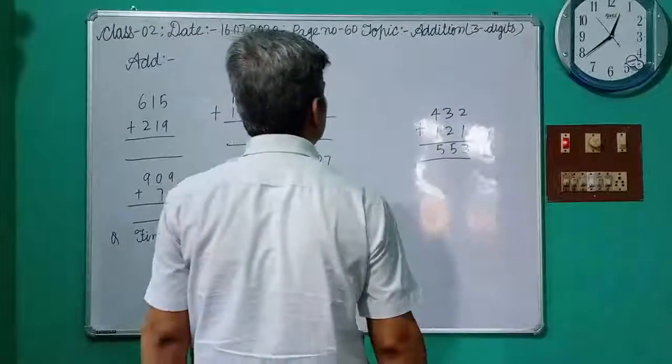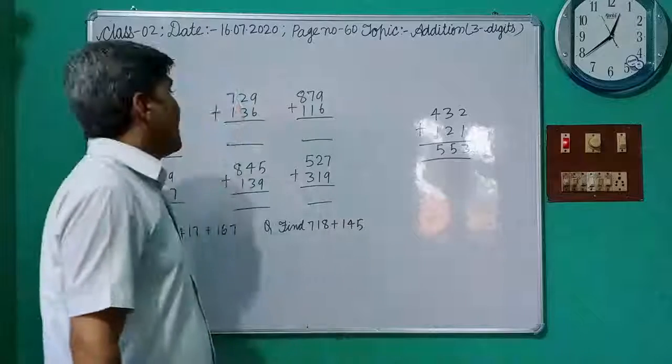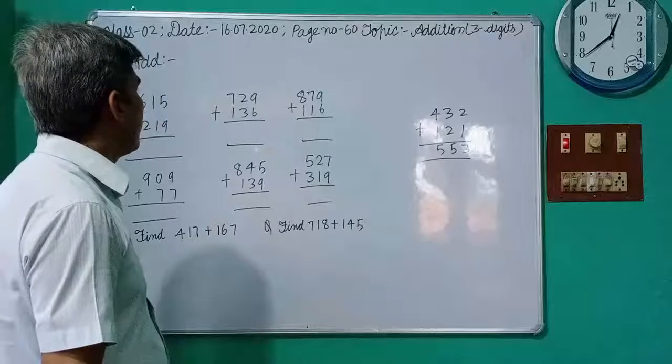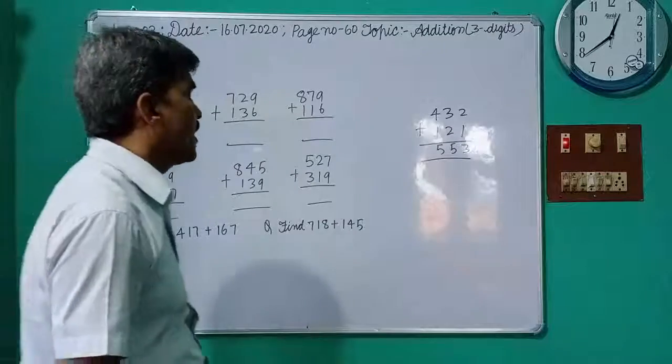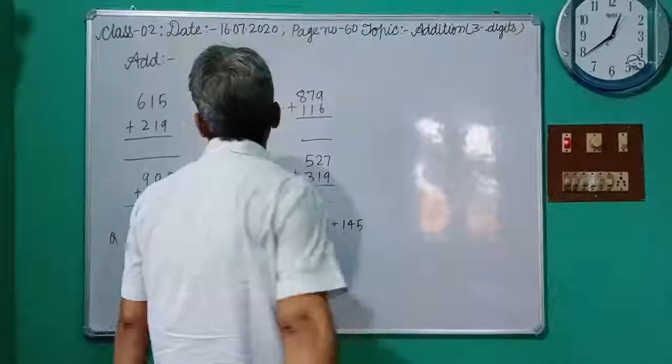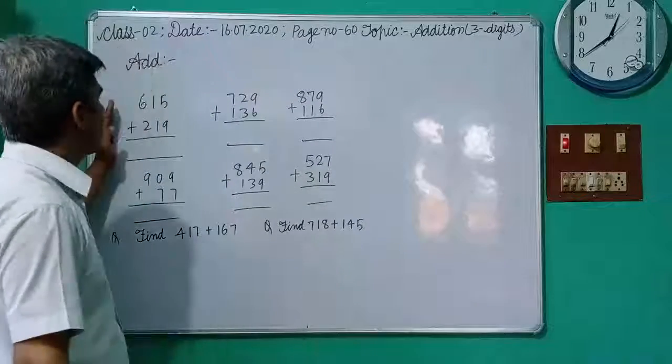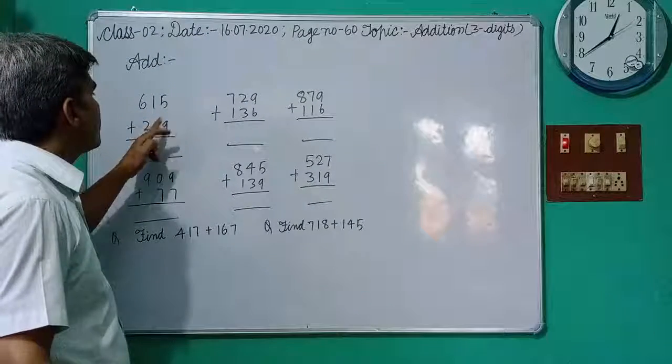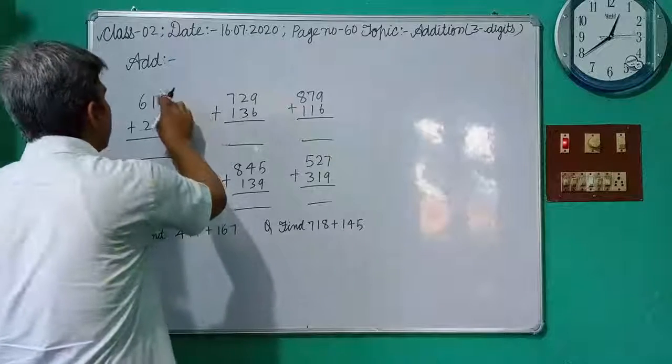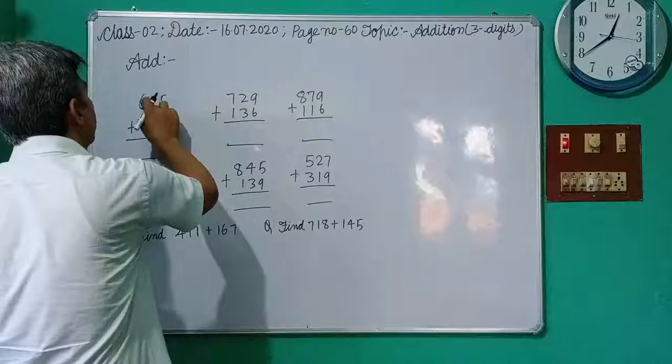But today students, I teach about additions of 3 digit numbers with carrying. Now come to the points. Your first question: 615 plus 219. At first you add 1s digit, then you add 10s digit, and then add 100s digit.